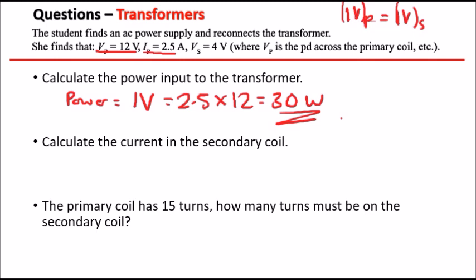Okay, once again, so in this case, we need to use the following relationship between the coils. We know that firstly, that the equation we have at the top here, so IV for the primary coil is identical or equal to IV of the secondary coil.